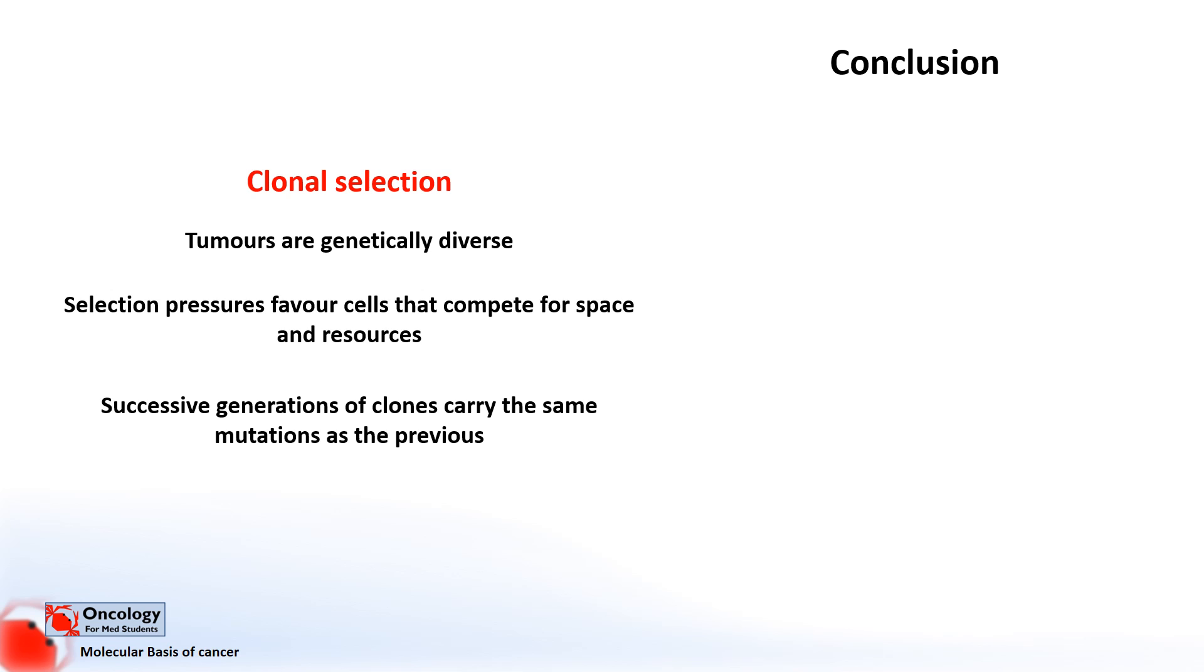So in conclusion. Tumors are genetically diverse. Selection pressures favor the cells that compete for space and resources. Successive generations of clones carry the same mutations as the previous. But they can mutate further to gain further advantages. And it's in this way that cancers are able to gain the sufficient number of mutations in order for them to become cancerous.